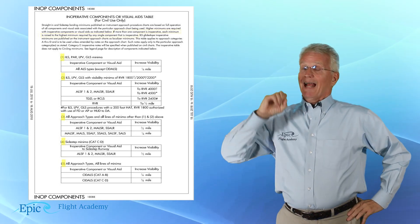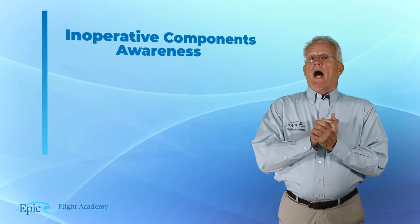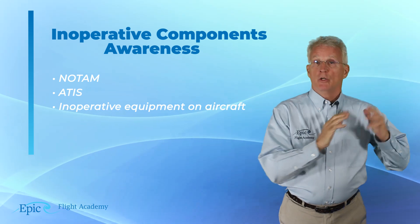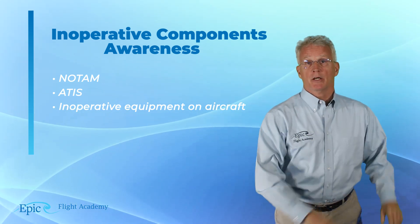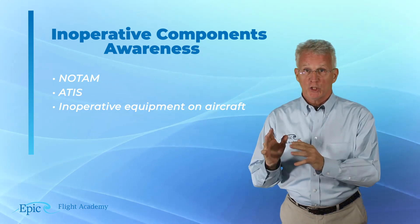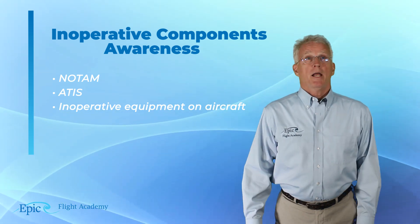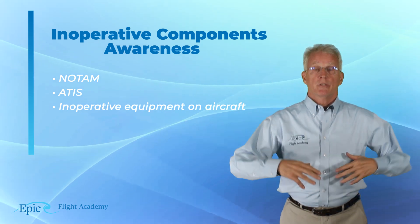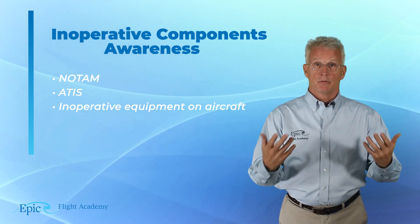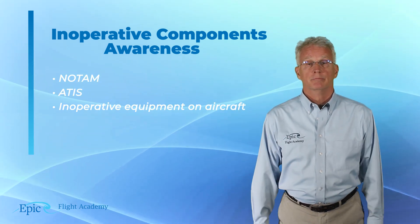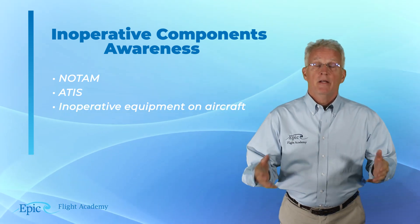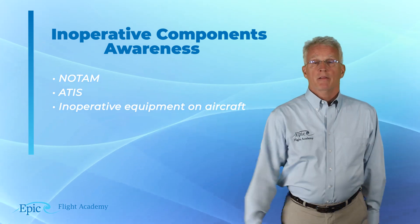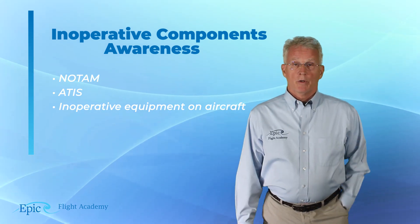I can think of at least three ways. Number one, I might be made aware of this inoperative equipment via NOTAM, a notice to airman, or a notice to air missions. Number two, I might be made aware of inoperative equipment by listening to the ATIS prior to my arrival at an airport. Or, obviously, if the inoperative equipment were on board my aircraft, then of course, I would be aware of it that way.